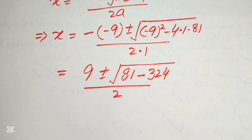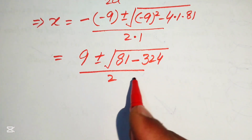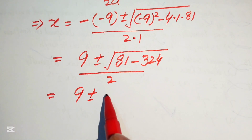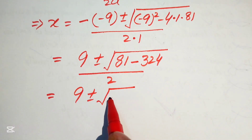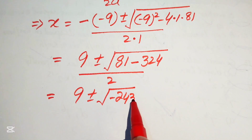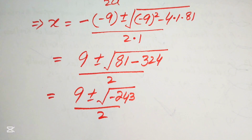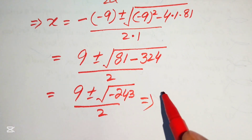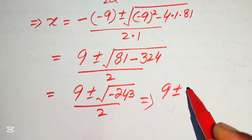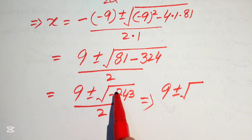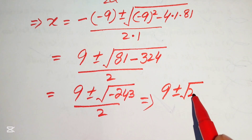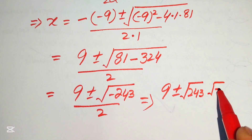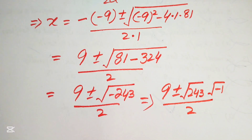Subtracting 81 minus 324 gives minus 243. So we have x equals 9 plus or minus the square root of minus 243, divided by 2. We break this radical into the square root of 243 times the square root of minus 1, divided by 2.